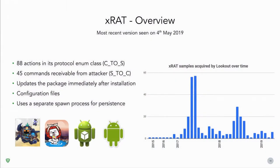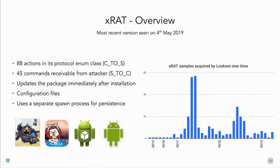Looking at a recent sample from May 2019, XRAT has two main aspects: a protocol class which is basically an enumeration with a set of things suffixed C to S (client to server), which we call actions the client can execute on an infected device, and S to C commands it can receive from its server. The command and control infrastructure can send back 45 different commands telling the RAT what to do.